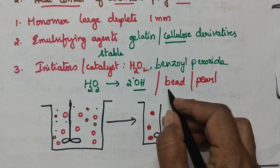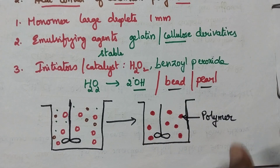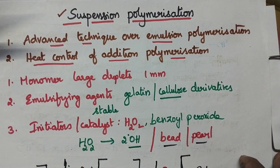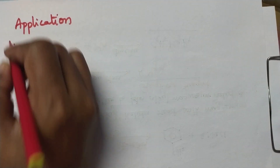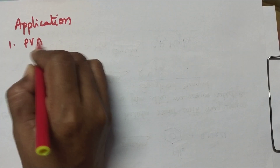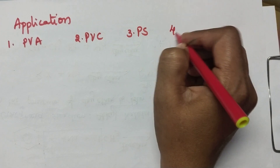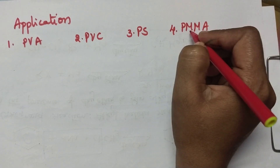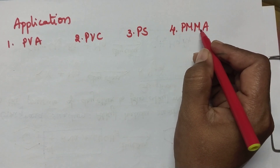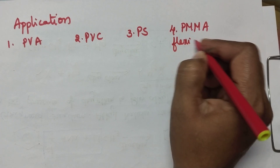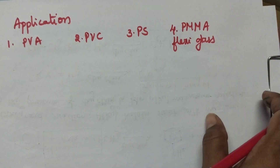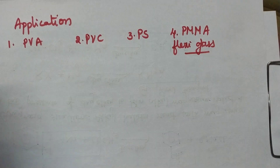Coming to the applications of suspension polymerization: this method is highly useful for the preparation of polyvinyl acetate, polyvinyl chloride, and polystyrene. It is also highly useful for the preparation of PMMA — polymethyl methacrylate — in other words called flexi glass. So this technique is highly useful for the preparation of flexi glasses.